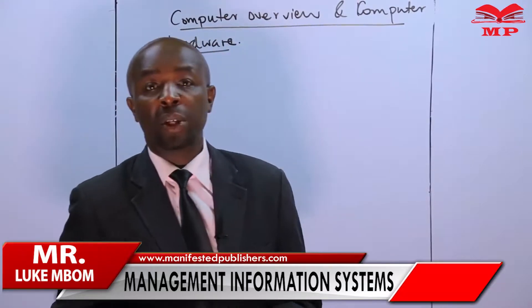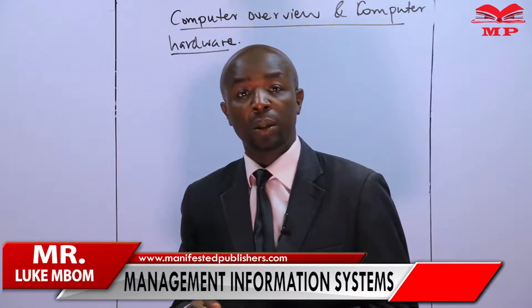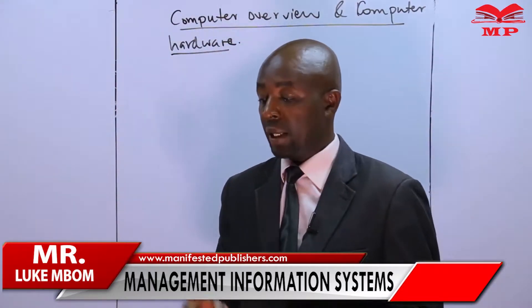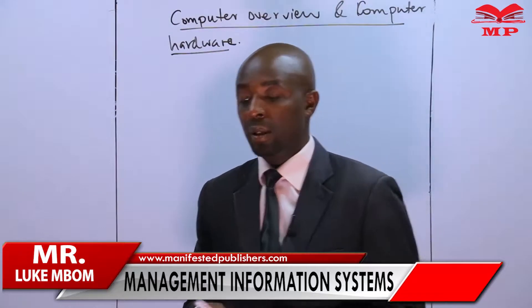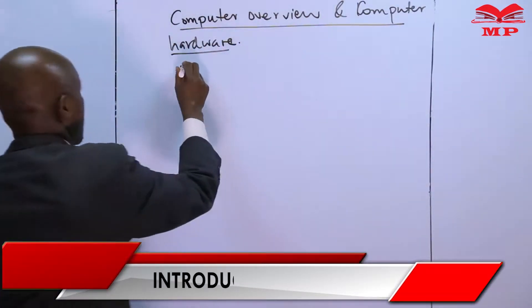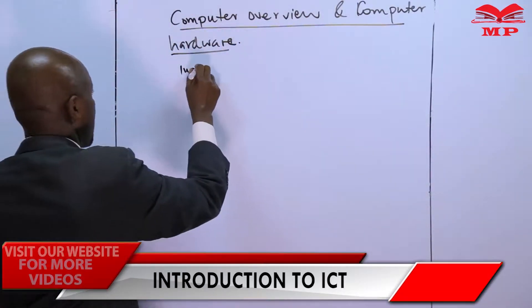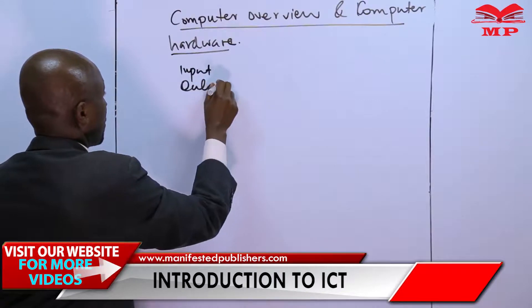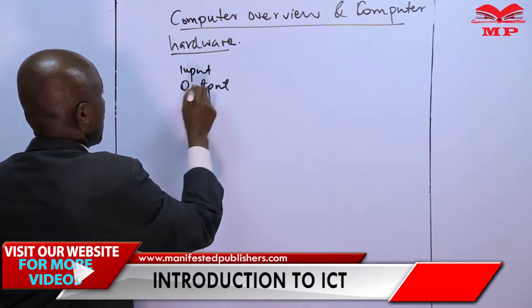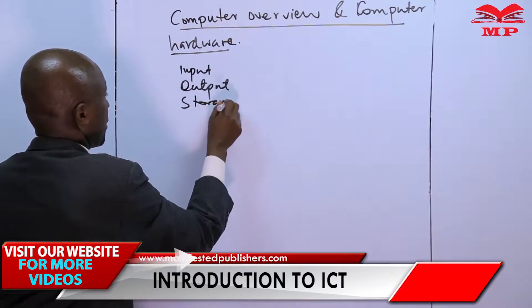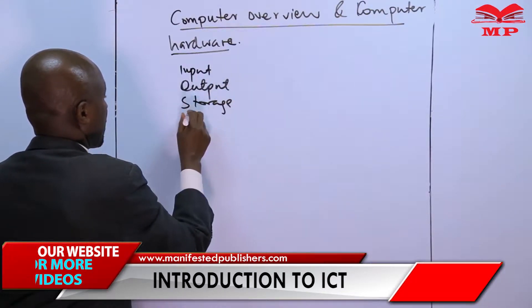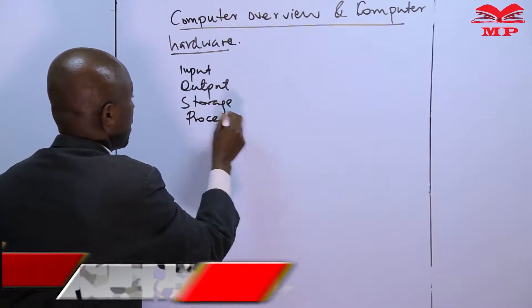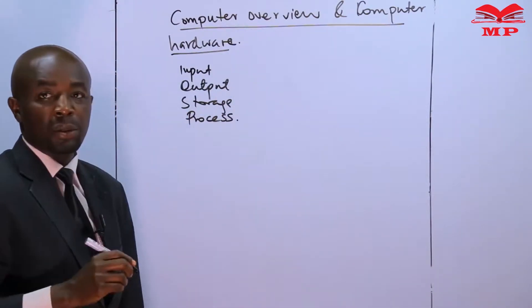Every time a student defines a computer system, the student must be aware of certain aspects. A computer system must have an input, a computer system must have an output, a computer system must have storage, and a computer system must be able to process data.